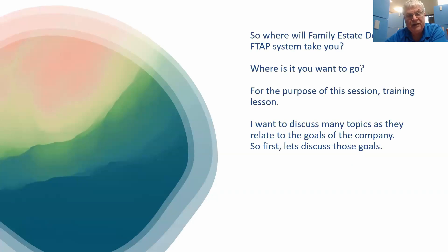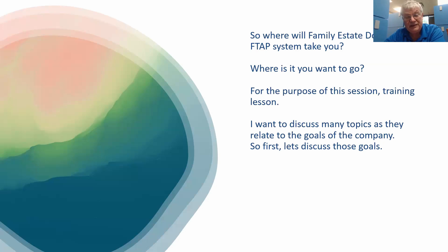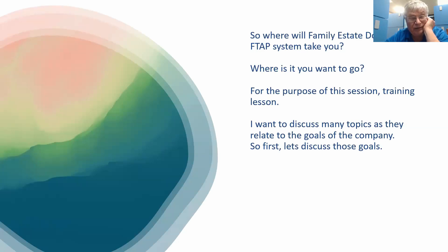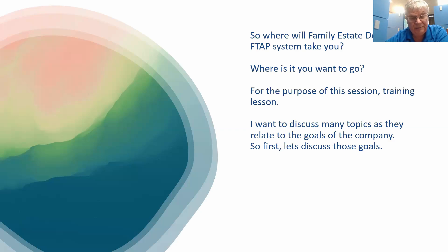The end goal is to develop the licensee into a productive and profitable licensee, and the definition of what that means is varied. The question is: where will Family Estate Docs and the Family Tree Asset Positioning System take you? Where is it you want to go? For the purpose of this training lesson, I want to discuss many topics as they relate to the goals of the company. What I've found is if your goals are congruent with my goals, we make a lot of progress.